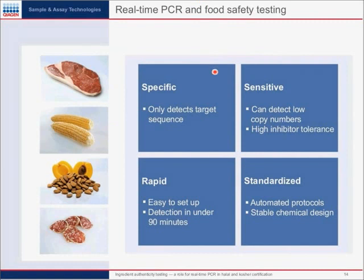Real-time PCR and food safety testing: it is specific — it detects only the target sequence, not other sequences. It is sensitive, detecting low copy numbers of DNA in your sample. It has high inhibitor tolerance, so that even if you have inhibitors, your PCR reaction in food should have high tolerance for them. It's rapid and easy to set up, with detection under 90 minutes. Standardized testing is very important — you can automate the protocols. It has a stable chemical design, so you know from sample to sample and test to test that it's the same thing.